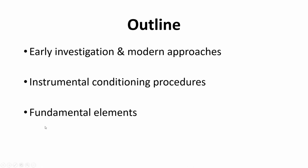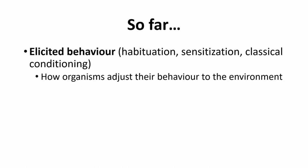We'll wrap that up in the next video and then move on to fundamental elements. So far in the course we've only really talked about elicited behaviour — things like habituation, sensitization, or classical conditioning. When we're talking about elicited behaviour, we're specifically talking about behaviours that are occurring and not really requiring the animal to make any kind of conscious response in order to obtain their unconditioned stimulus, usually food. These elicited behaviours are how organisms adjust their behaviour to the environment without having to intentionally make that change.